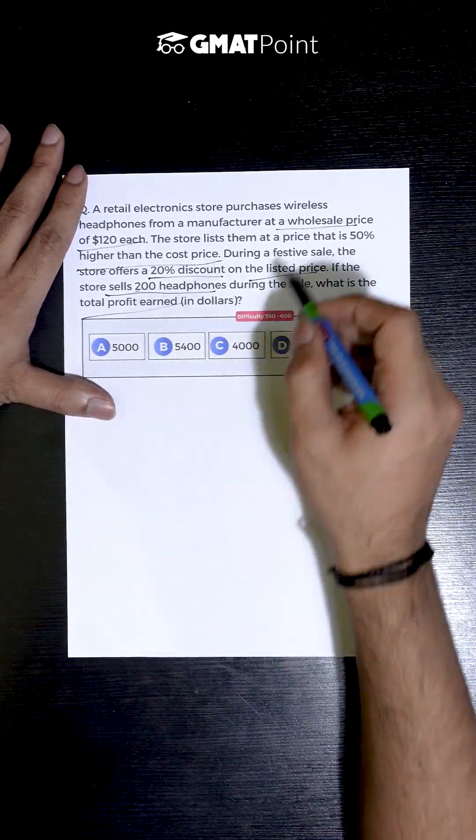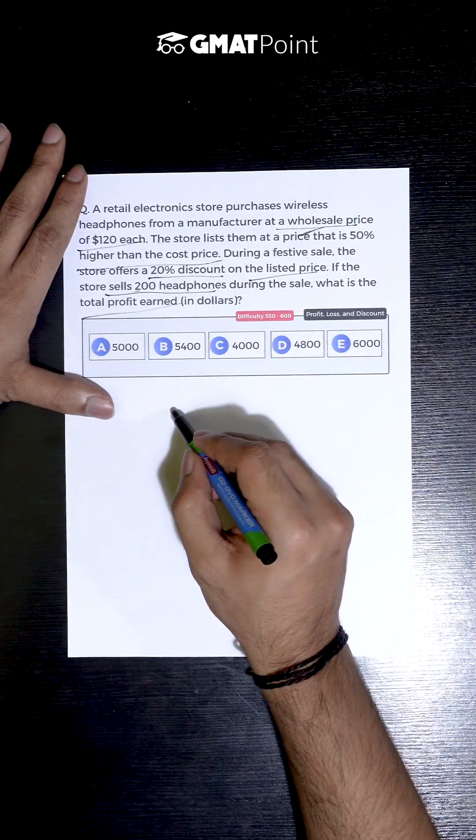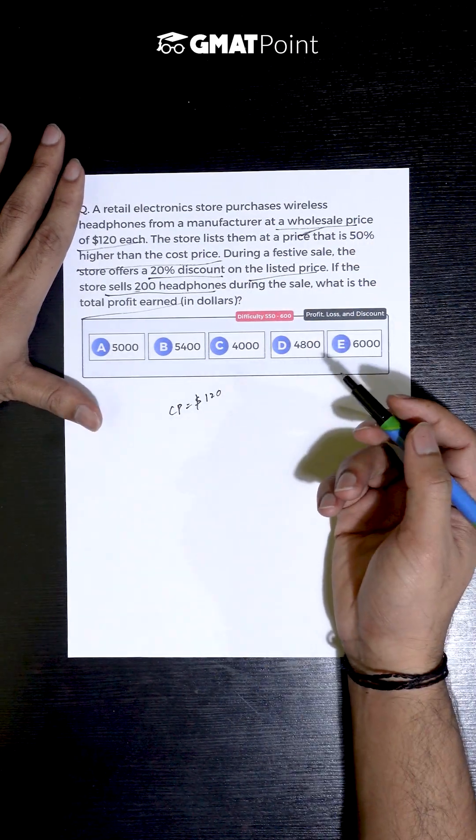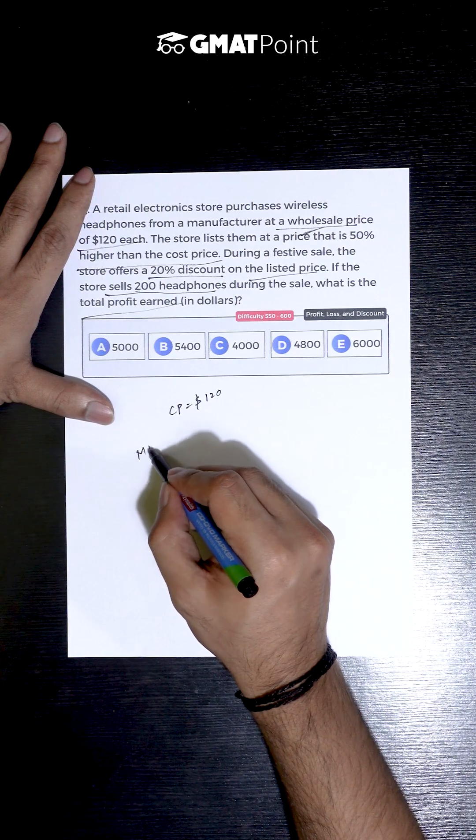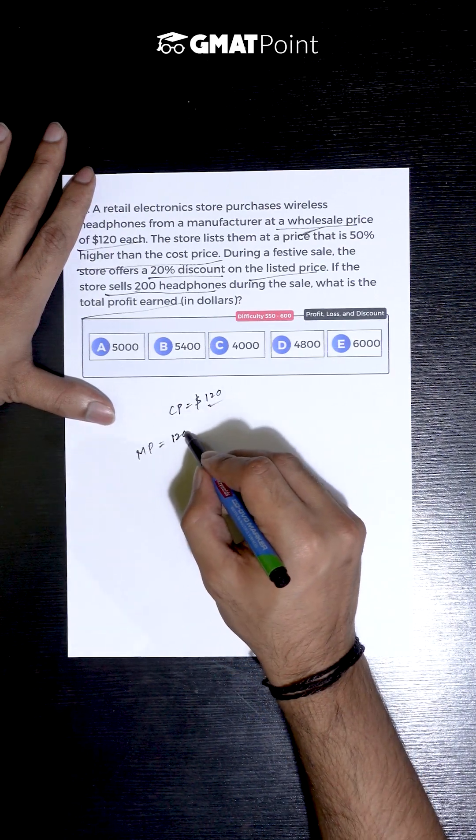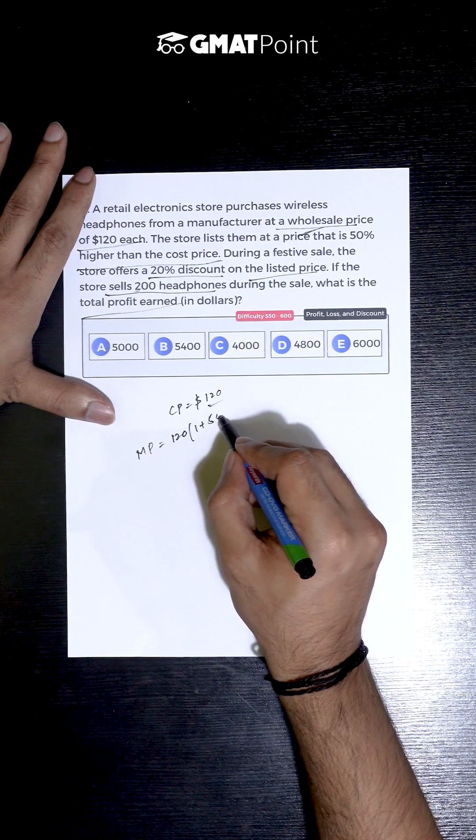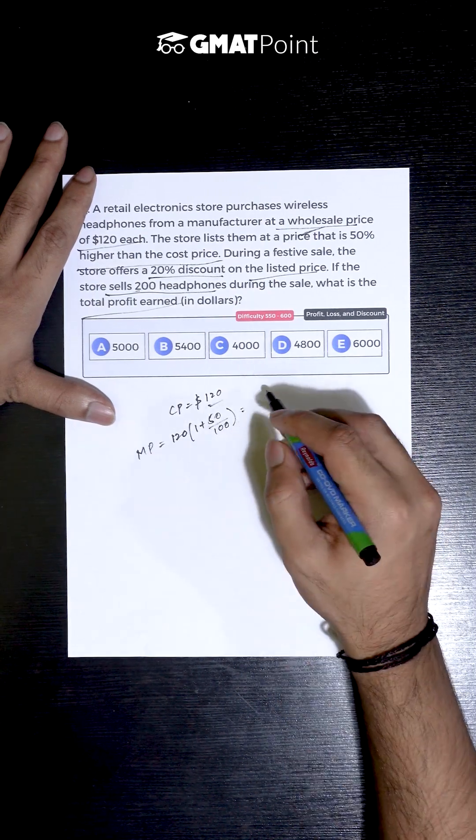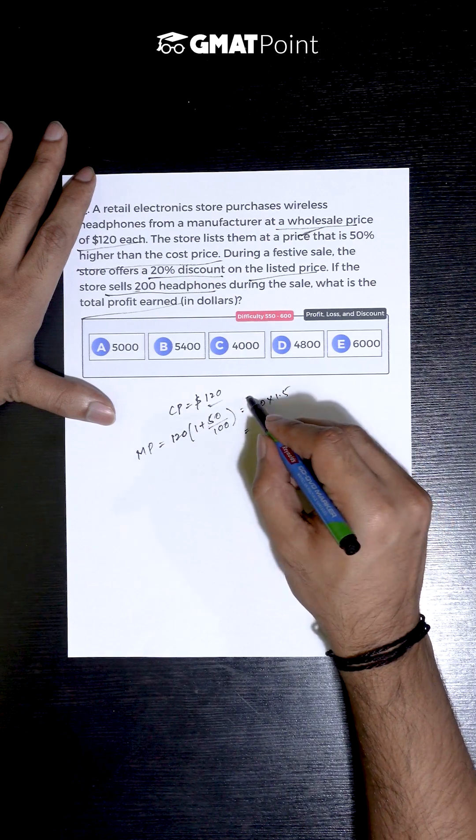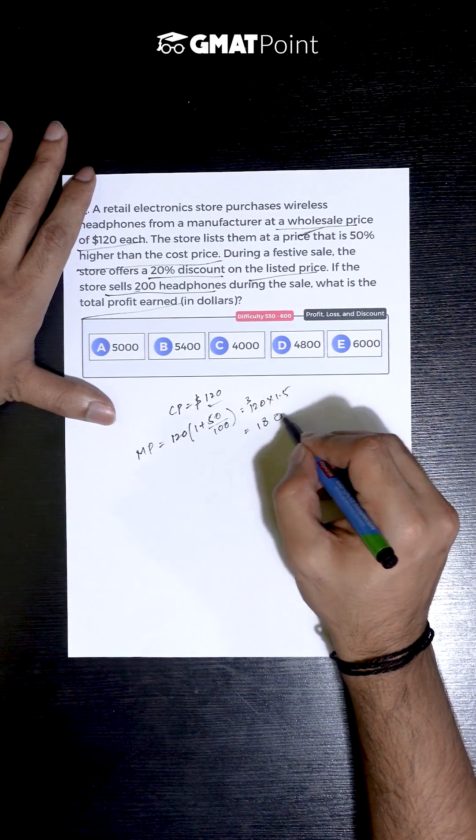So, a store is buying from a wholesaler at a cost price of $120 each and they are marked at a price which is 50% more than this cost price. The market price can be calculated as 120 × (1 + 50/100) which is 120 × 1.5. So, this is $180.